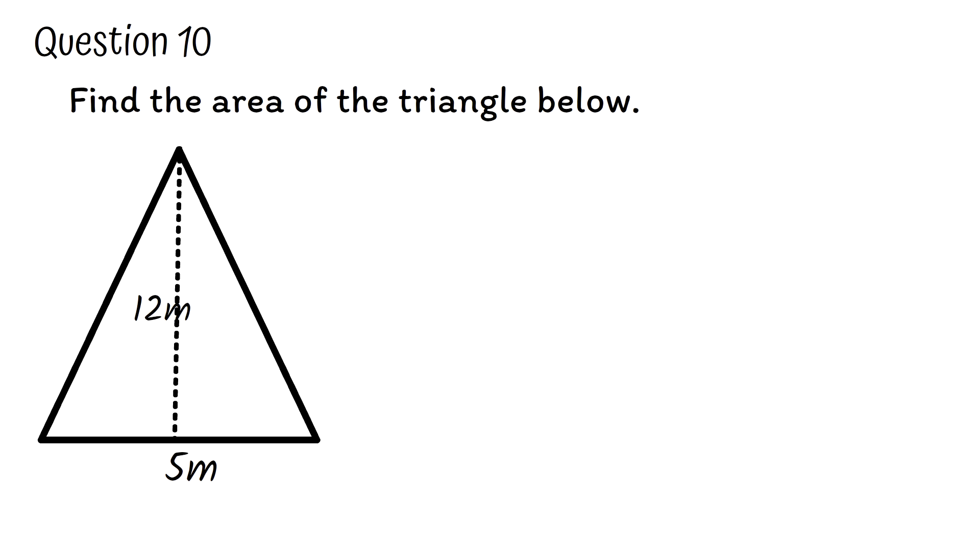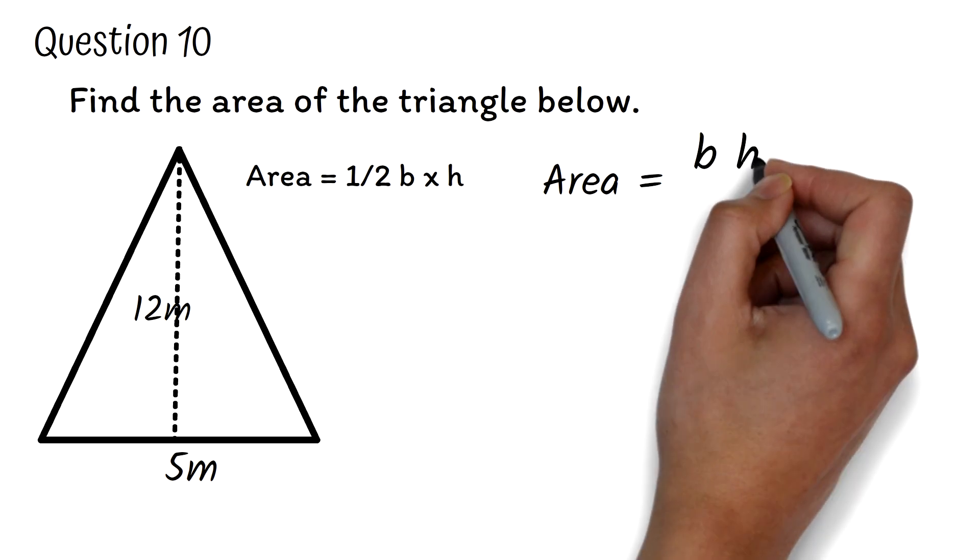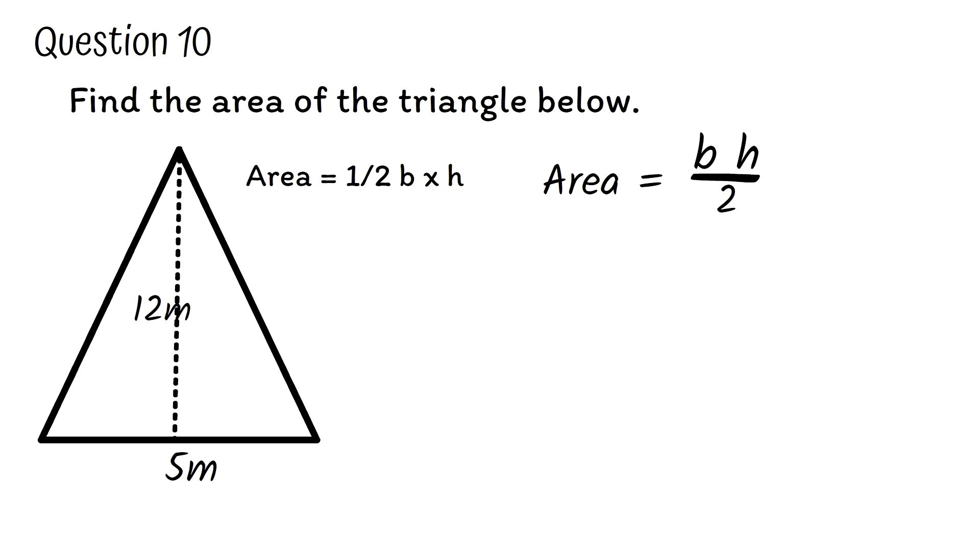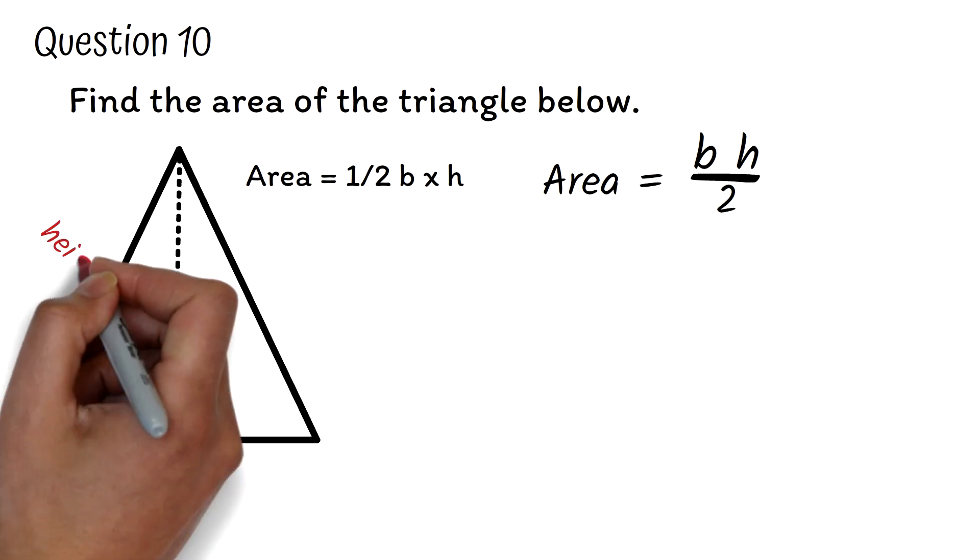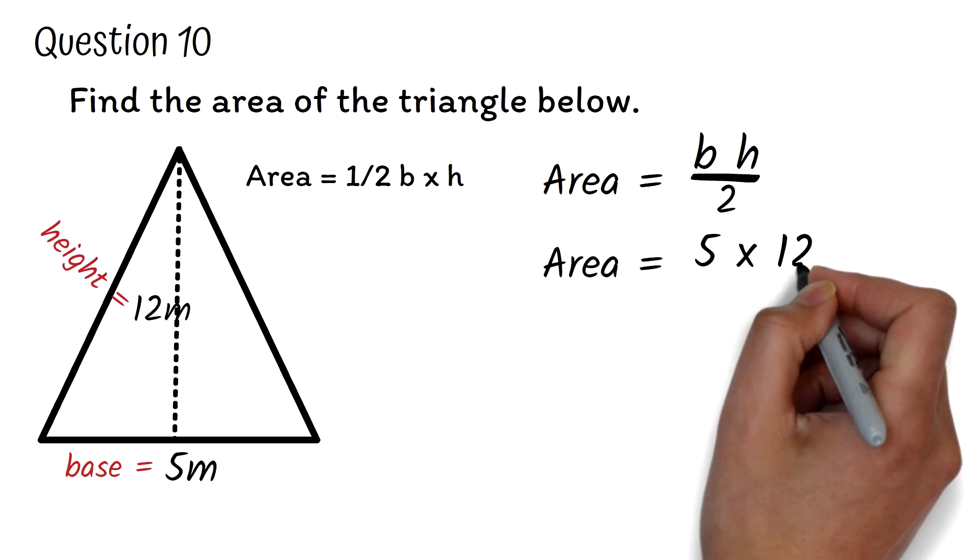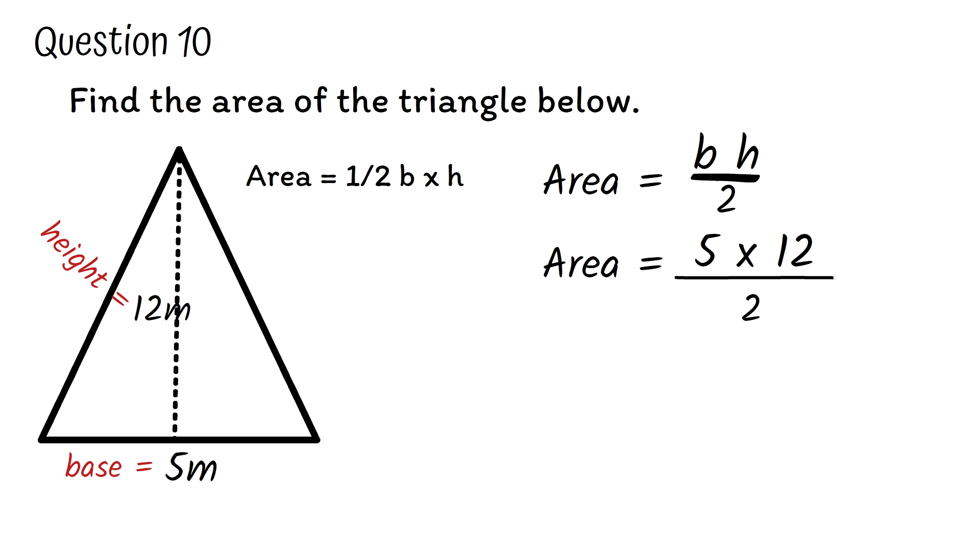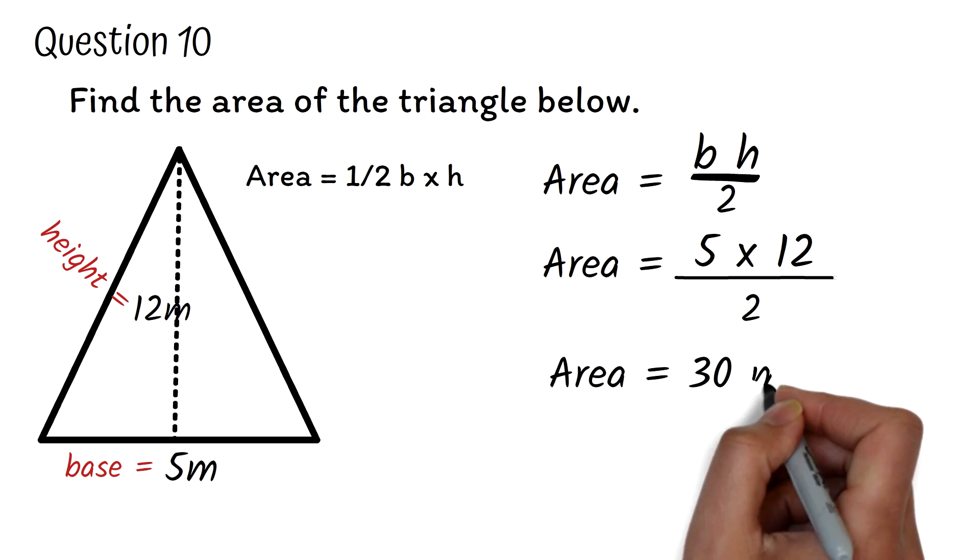Question 10. Find the area of the triangle below. Please, you have to be very familiar with finding the area and perimeter of plane figures. In most tests, the formula will be given to you. Your work is to apply it correctly. Area of a triangle is half times the base times the perpendicular height. Or we can also say, it's the base times perpendicular height divided by 2. Here, the base is 5 meters. The height is 12 meters. The area is 5 times 12 divided by 2. 5 times 12 is 60. Divided by 2 is 30. So the area of the triangle is 30 meters squared.